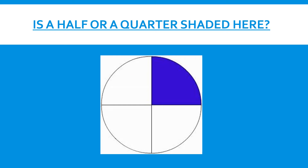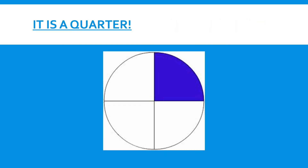Is this circle shaded in half or one quarter? One quarter of this circle was shaded in blue — one over four. Did you get it correct?